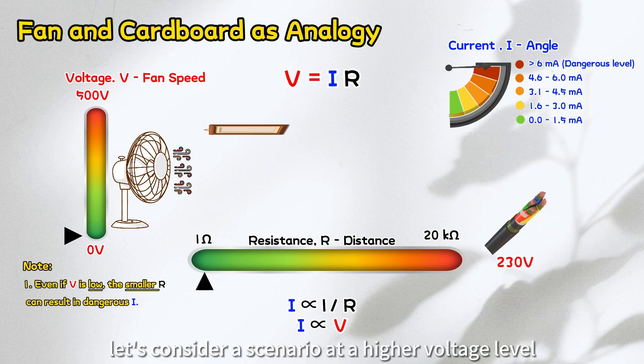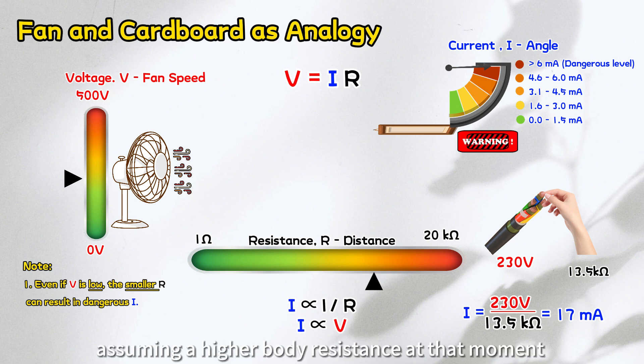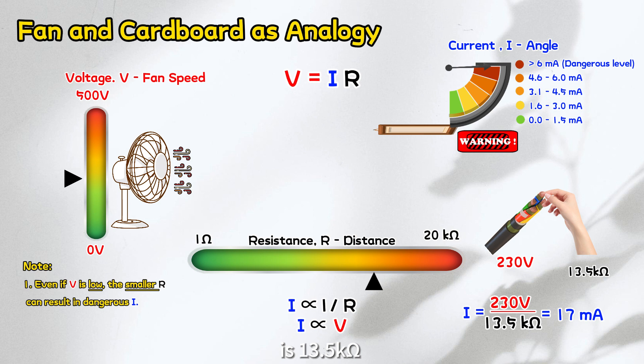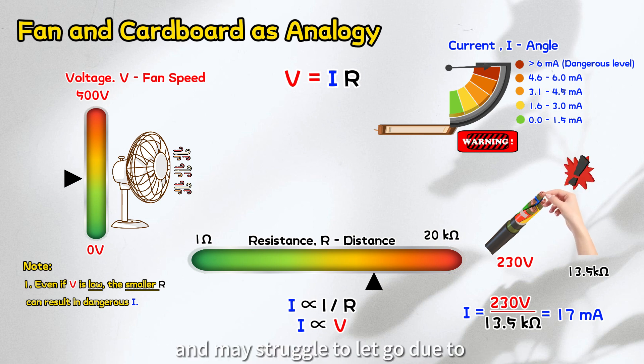Moving on, let's consider a scenario at a higher voltage level. If a person touches a live cable with voltage of 230 volts, assuming a higher body resistance at that moment is 13.5 kiloohms, the resulting current will also be at a dangerous level, around 17 milliamps. The individual might experience a painful shock and may struggle to let go due to loss of muscle control, which can lead to more severe injuries.